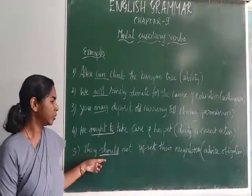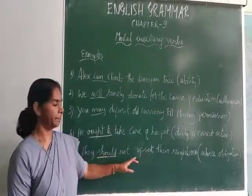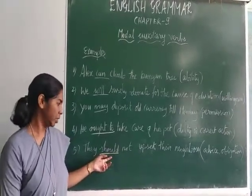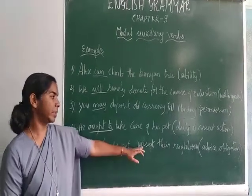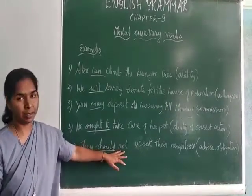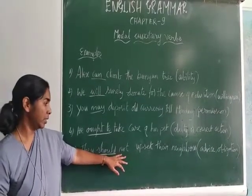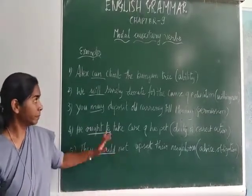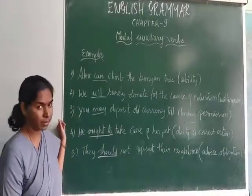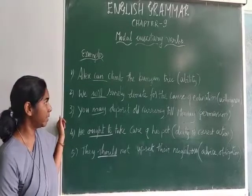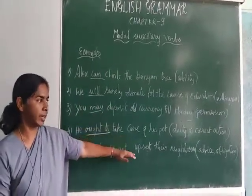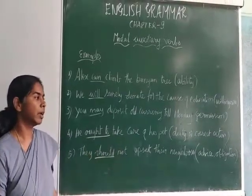Fifth example: 'They should not upset their neighbor' — should here expresses advice or obligation. It is an advice that no one should upset or annoy their neighbor. These are a few examples of modal auxiliary verbs used to express ability, willingness, permission, duty, correct action, advice, and obligation.